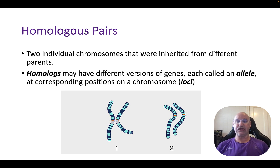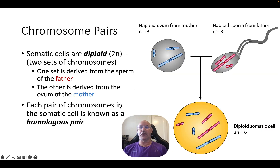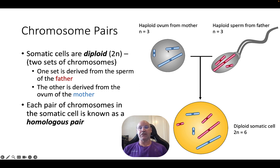As a summary: both gametes, the ovum and the sperm, have the haploid number. In this example there are three chromosomes — three from mum, three from dad — and when they come together at fertilisation, and in every cell division after that, we have the diploid number in the somatic cells.